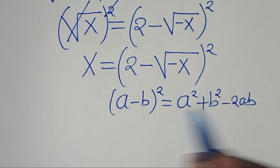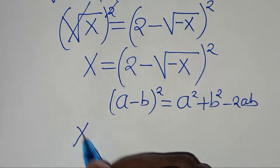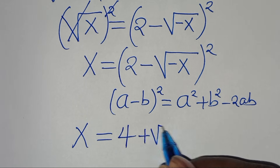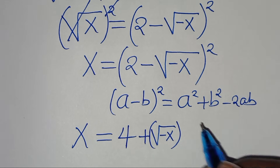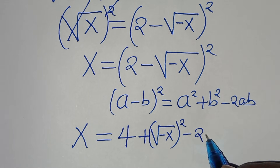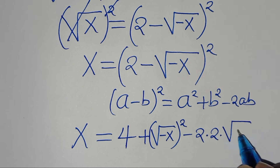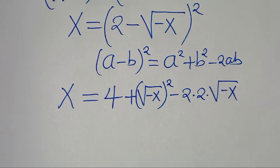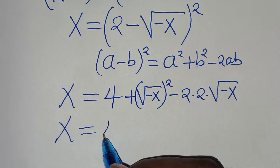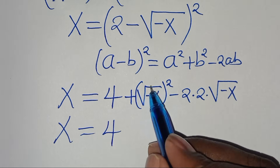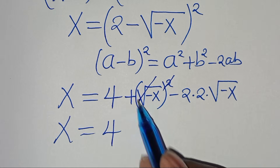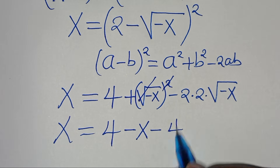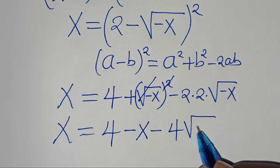Applying this algebraic identity, we have x is equal to 2 squared, which is 4, plus the square root of minus x raised to the power of 2, then subtract 2 multiplied by 2 multiplied by square root of minus x. Eliminating the square root sign, we have plus times minus x, which is minus x, then subtract 4 times square root of minus x.